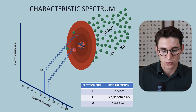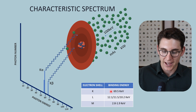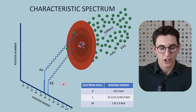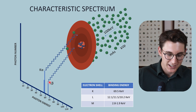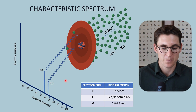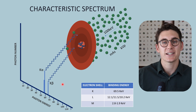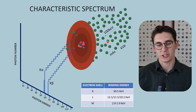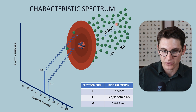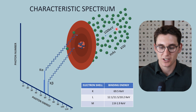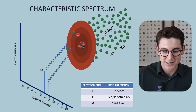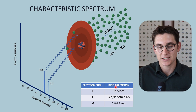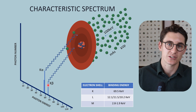If an M-shell drops into our k-shell vacancy, the difference between the M-shell and the k-shell is roughly 67 keV — that's known as our k-beta characteristic radiation. These characteristic x-rays come at discrete, predictable energy levels depending on our target material. Importantly, these k-alpha and k-beta characteristic radiations are independent of the energy of the striking electrons. As long as the electrons have sufficient energy to displace a k-shell electron, we will get these characteristic radiations. If they were less than 69.5 keV, we wouldn't get any k-shell characteristic spectrum.